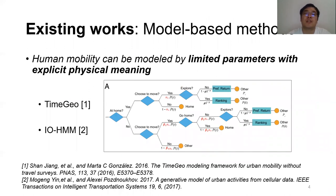Realistic simulation of human movement is not a new problem and has been well studied in the past decades by researchers from transportation and physical fields. We call this mainstream of research works model-based measures, because they assume that human mobility can be modeled by limited parameters with explicit physical meaning. Taking Time-Geo as an example, we extract temporal patterns from large-scale mobility data, build templates based on these patterns, cooperate with a decision tree and Markov model to generate temporal choices, and use a rank-based EPR model to model spatial choices. These methods rely on assumptions of typical mobility patterns and fail to generate various trajectories in the real world.